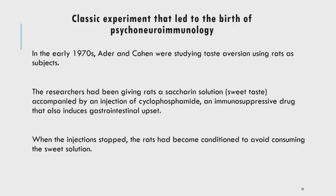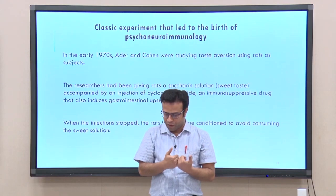When the saccharine solution was given to the rats along with the injection of the drug, they learned to avoid saccharine. Saccharine, which they had earlier preferred, was now associated with the drug that caused stomach upset, so the rats learned a new response — they learned to avoid the saccharine solution because of its association with the drug which caused gastrointestinal problems.